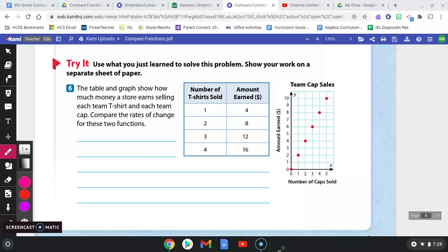So if we look at the table, if they just sell one t-shirt, they earn $4. If they sell two t-shirts, they earn $8 and so on and so forth.